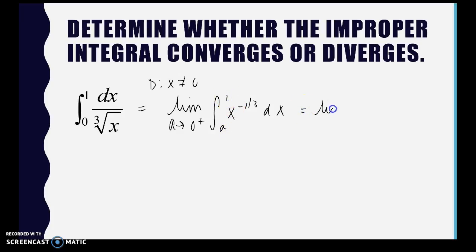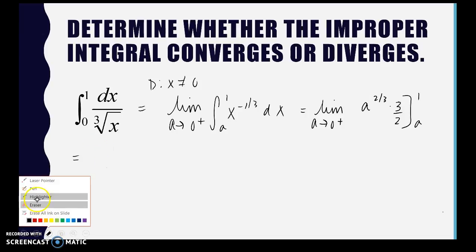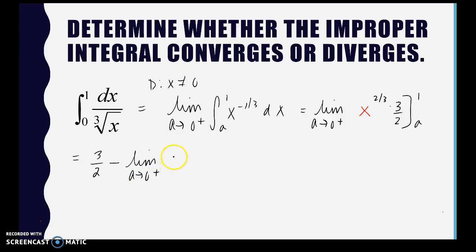When we integrate using the power rule — limit as a approaches 0 from the right — we add 1 and divide by the new exponent. For the upper bound we don't need the limit statement, so that gives 3/2. Then we subtract the limit as a approaches 0 from the right of 3a^(2/3) over 2. This limit approaches 0, so the limit of the integral is 3/2, and therefore the integral converges.